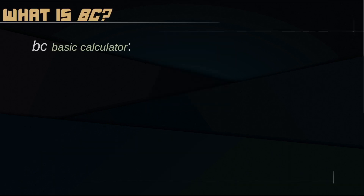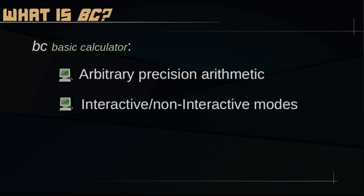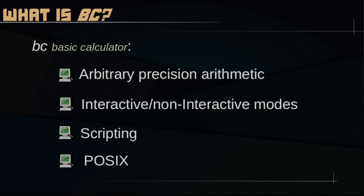What is BC? BC stands for Basic Calculator. It's a command-line tool for UNIX-like systems and allows for arbitrary precision arithmetic, which means you can work with numbers as big as you want, or as you can handle with your RAM. It allows for interactive and non-interactive modes, scripting, and it's part of the POSIX standard, so it's available on any UNIX-like installation.